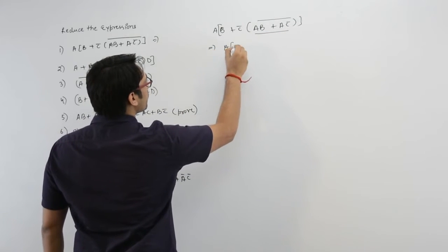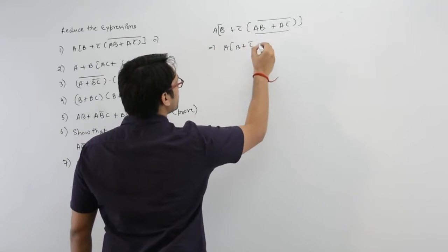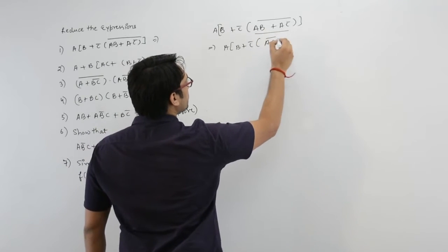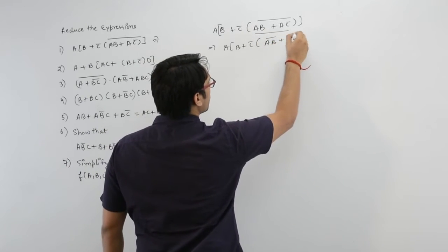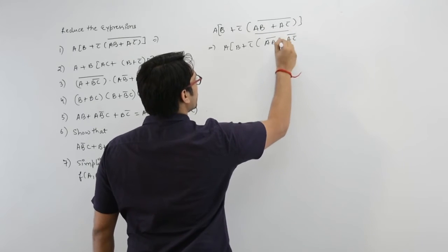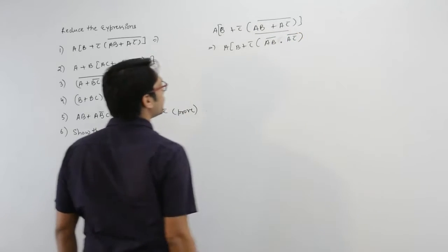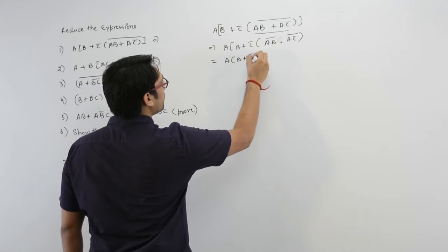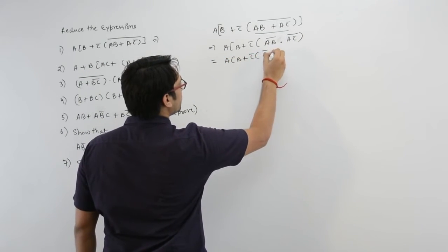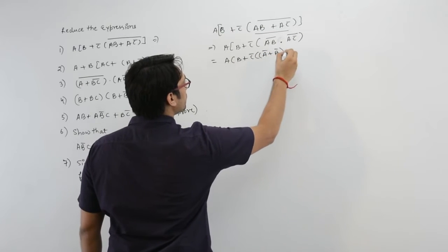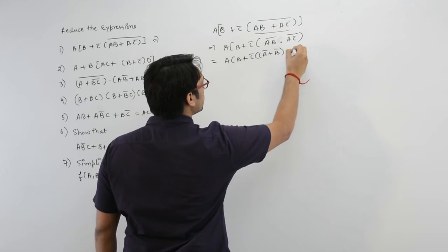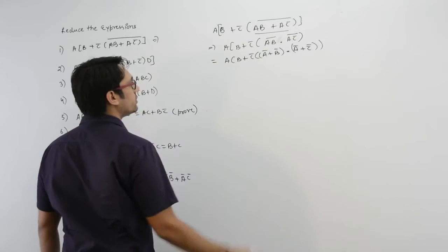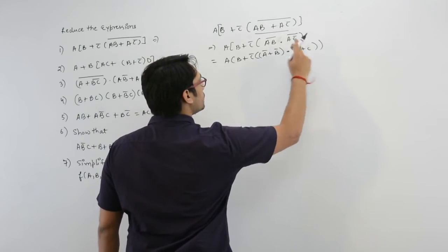So AB plus C complement can be written as AB complement plus AC complement. Further, applying De Morgan's law, it becomes A complement plus B complement, dot A complement plus C complement complement — which reduces to C only.